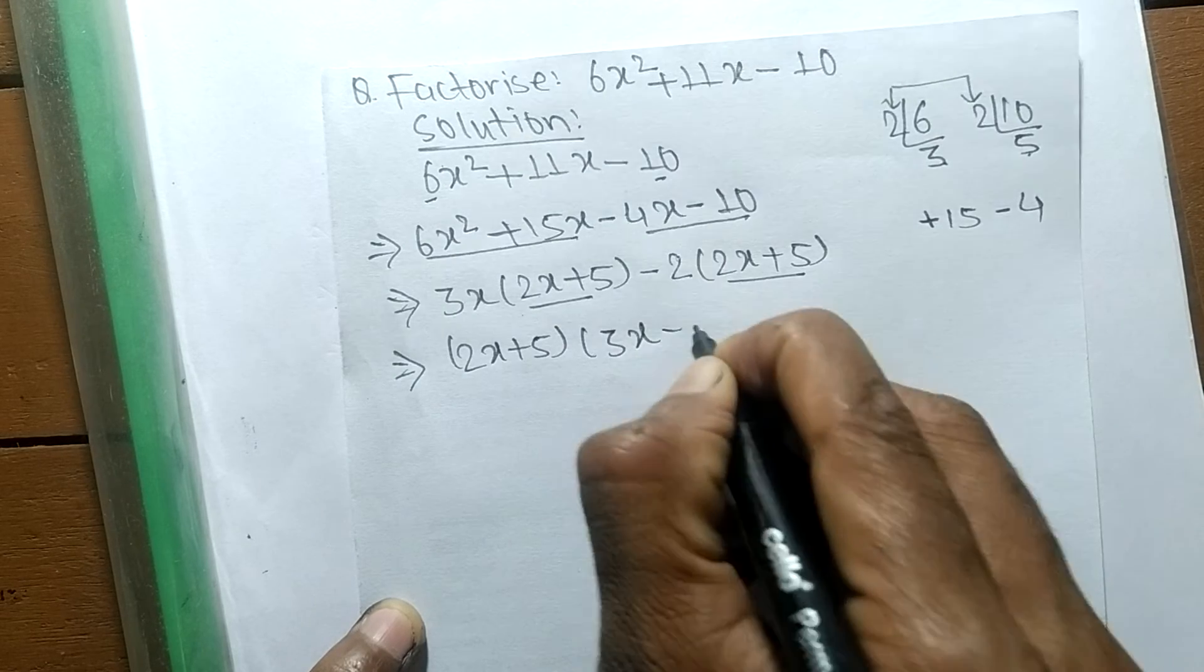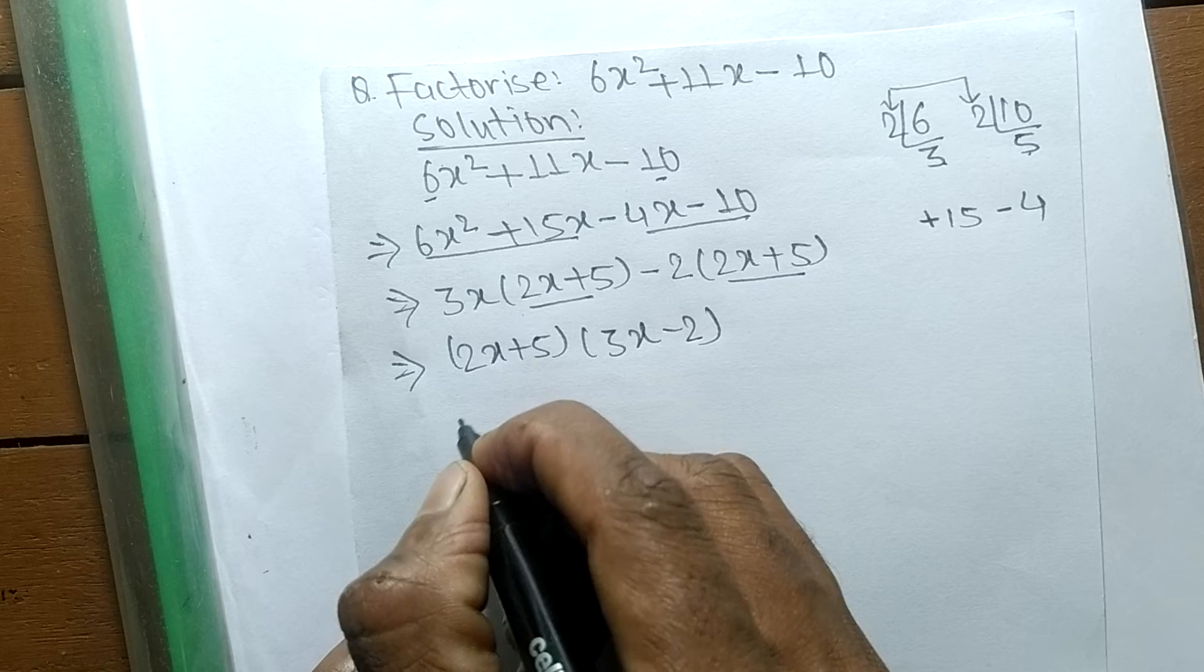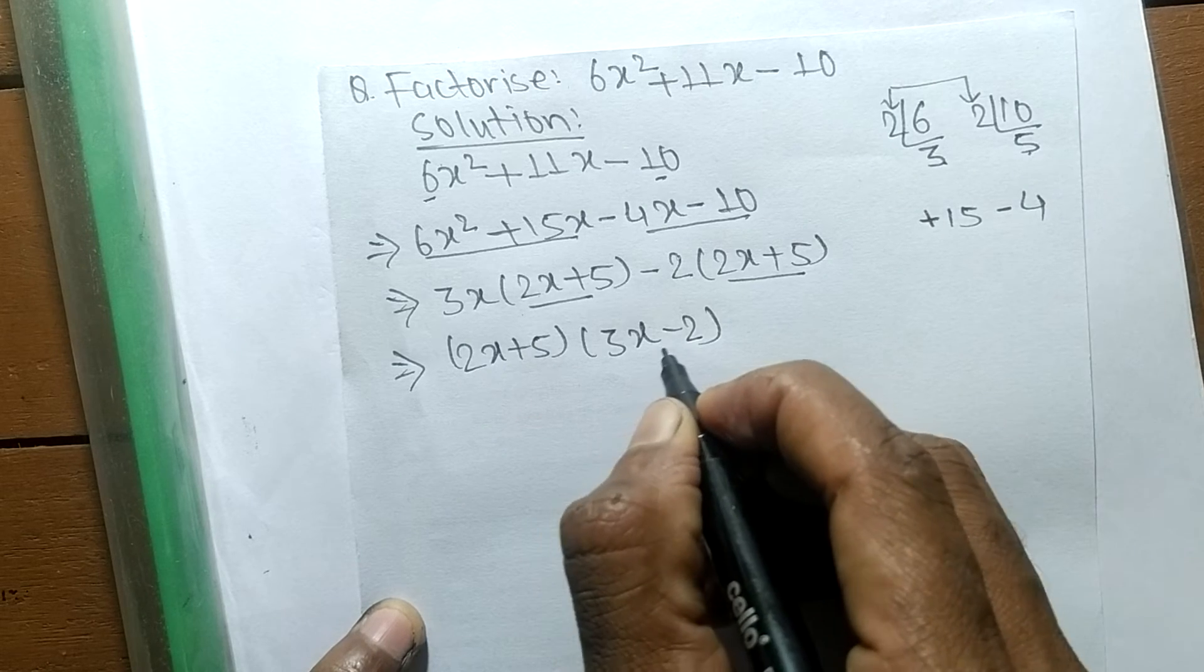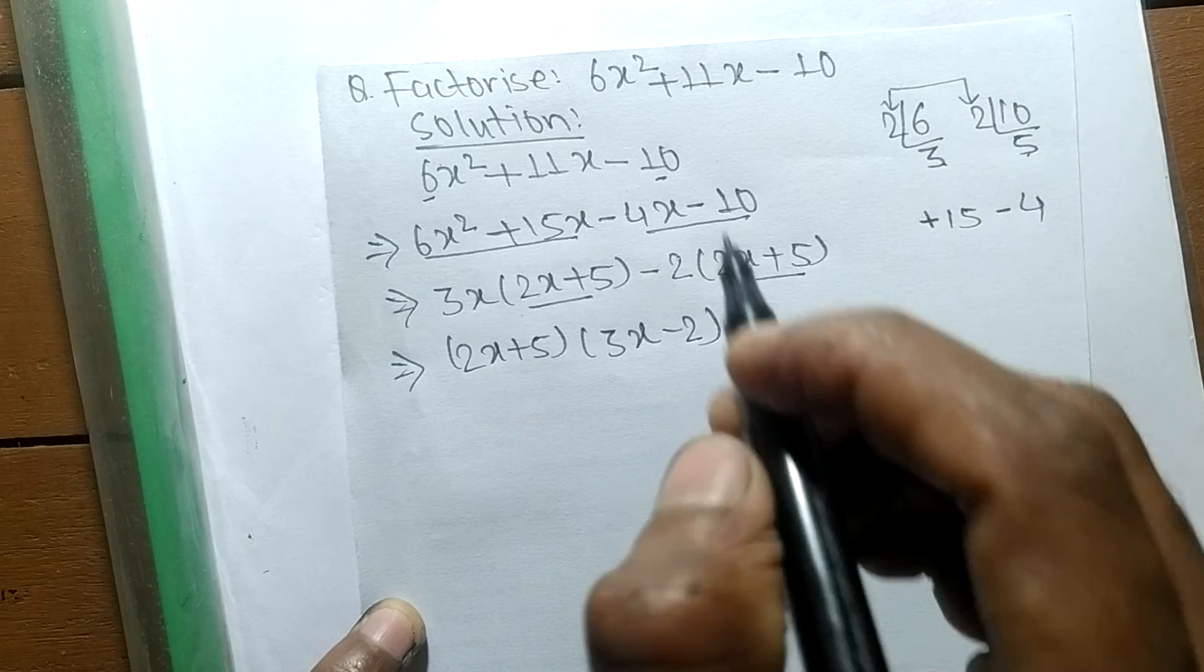So (2x + 5) and (3x - 2) are the prime factors of 6x² + 11x - 10.